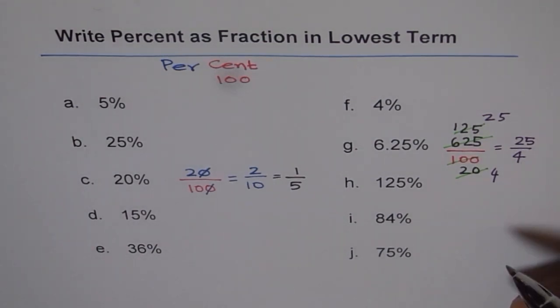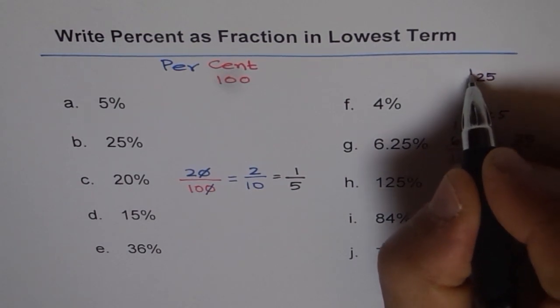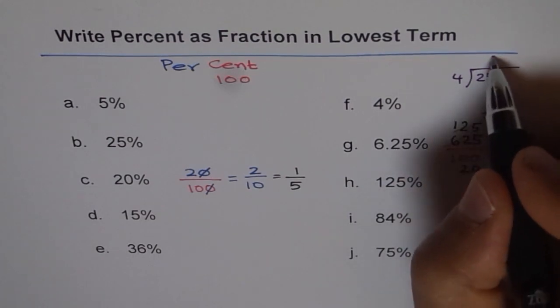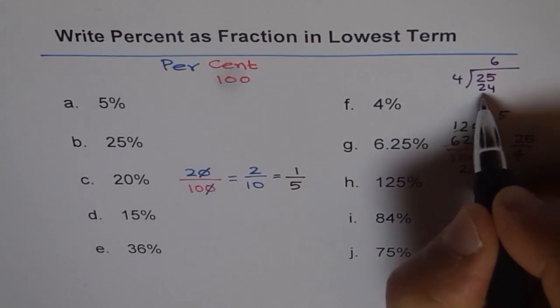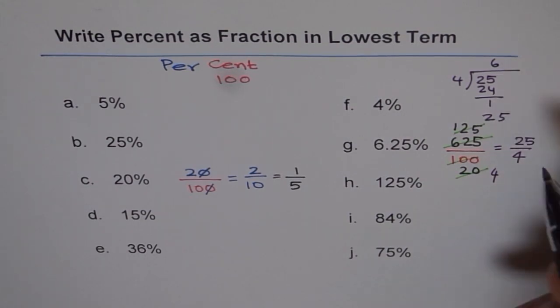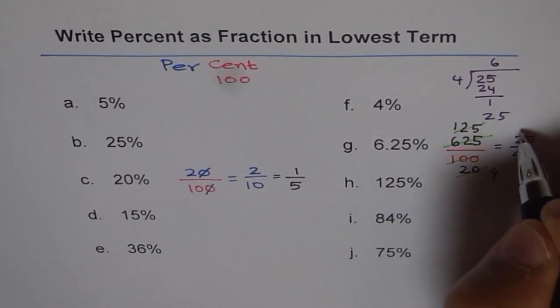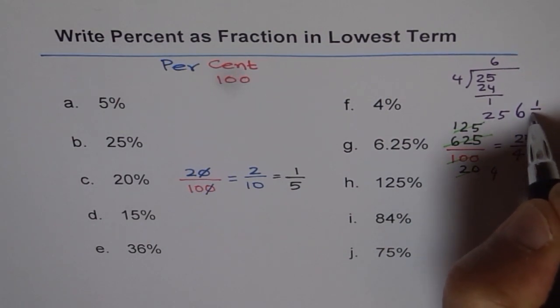Divide 25 by 4. So let us do it. 25 divide by 4. 4 goes 6 times. You get 24 and the remainder is 1. So it is 6 wholes, 1 remainder. So this could be written as 6 wholes, 1 over 4. So that could be the answer in mixed numbers.